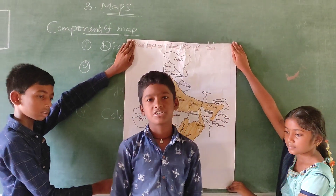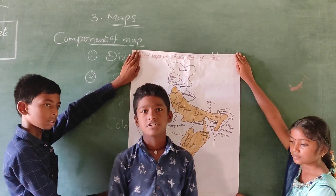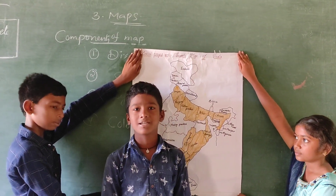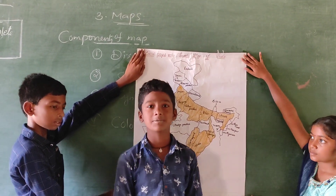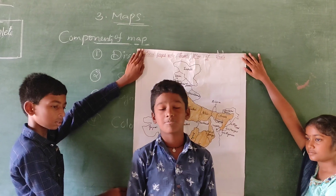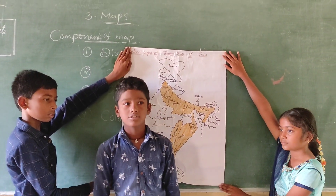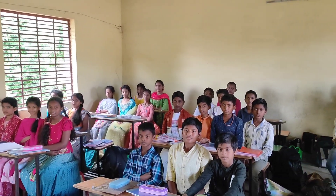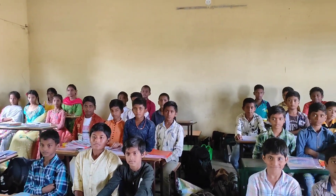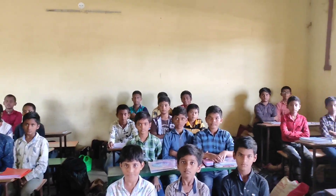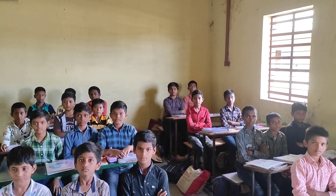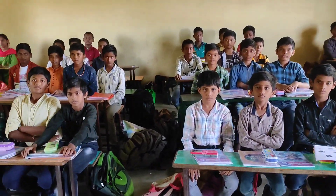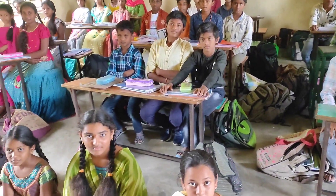Maps based on scale: there are two types of maps based on scale. First is large scale maps. Large scale maps represent small areas and can be divided into two types: cadastral maps and topographical maps. Cadastral maps show property boundaries. Topographical maps show detailed surface features. Second is small scale maps, which represent large areas.